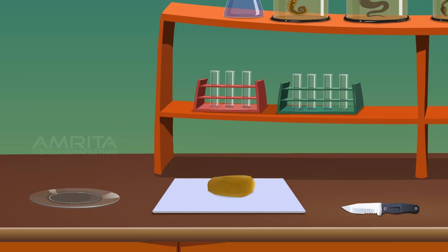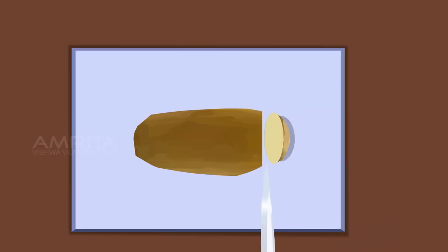Procedure. Take a potato from the watch glass and place it on the tile. Take a knife and cut both ends of the potato to make it flat.